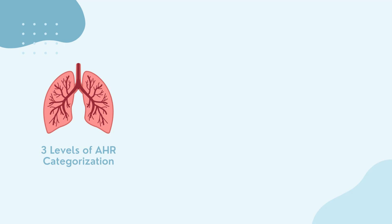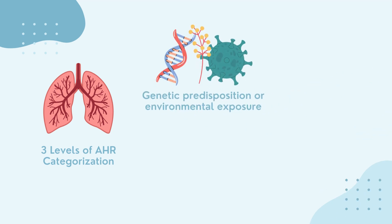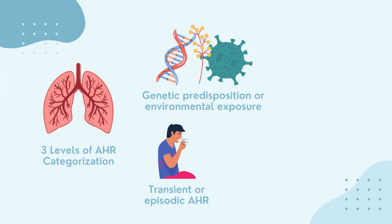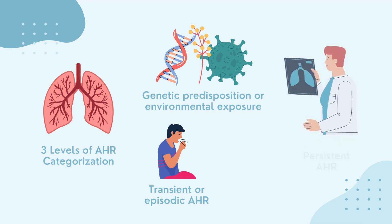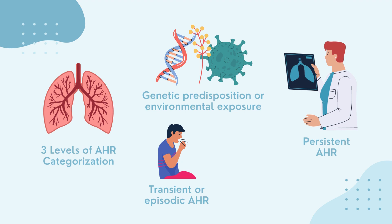It might be helpful to envision three levels of categorization. First, genetic predisposition or environmental exposure to sensitizing factors and stimuli such as allergens, viruses, or mutations and occupational sensitizers like chemical agents. Second, transient or episodic AHR, which is marked by instances of active inflammation. And finally, persistent AHR, which is marked by structural changes to the airway.